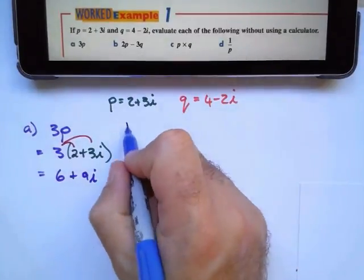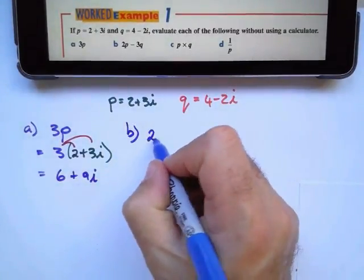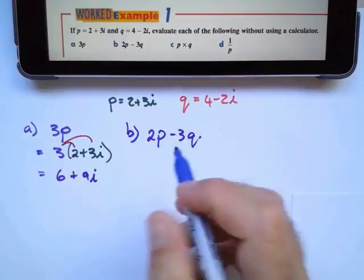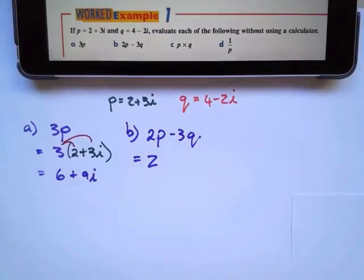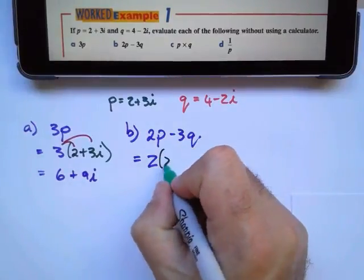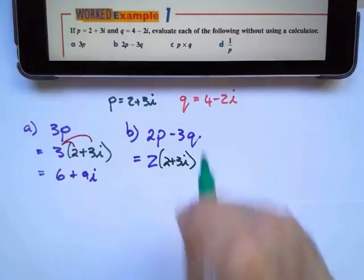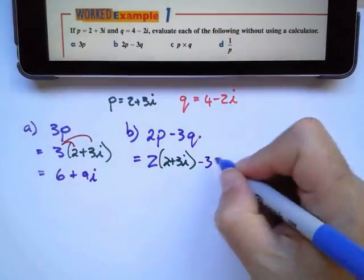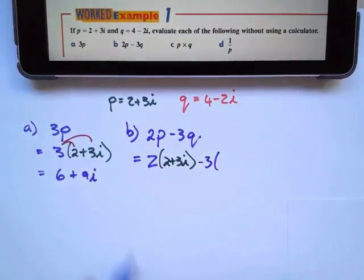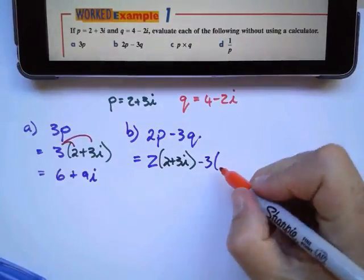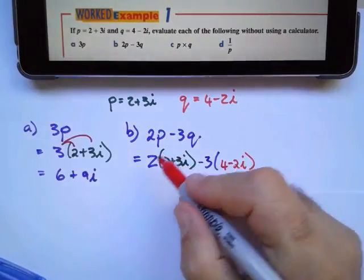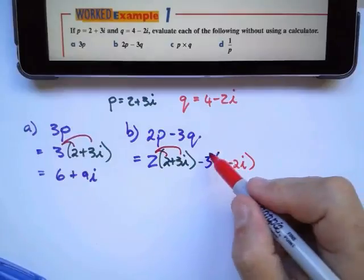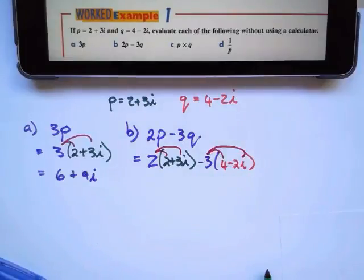In part b, they say 2 times p take away 3q and we're going to do the same thing. 2 times p, and p equals 2 plus 3i, take away 3 times q, and q equals 4 minus 2i. We're going to apply the distributive law.